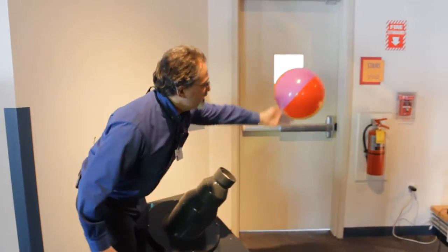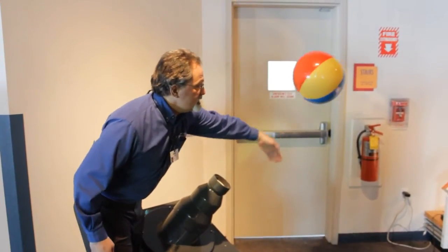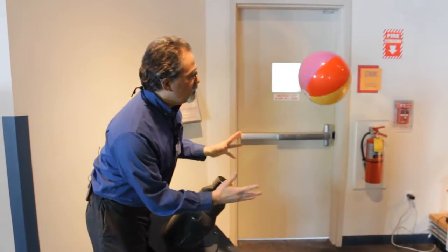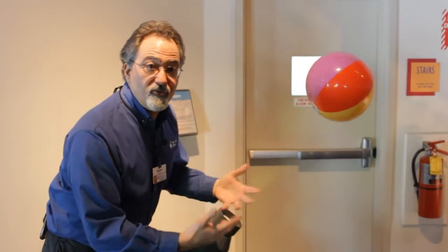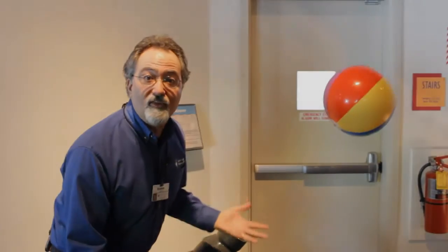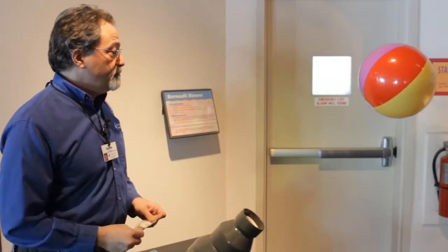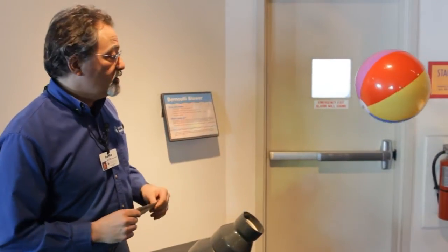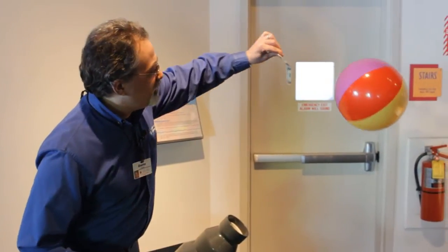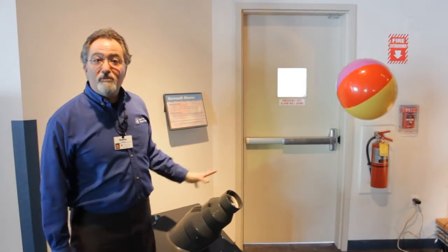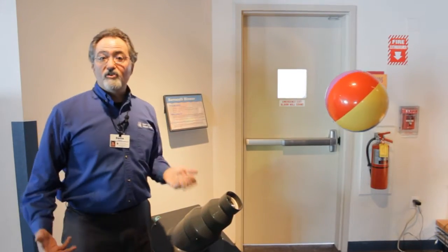Gravity is still pulling the beach ball straight down. Only now, somehow that force is coming from some other kind of effect. So with something simple like a piece of paper or a piece of yarn, you could see where the air is flowing around the beach ball.